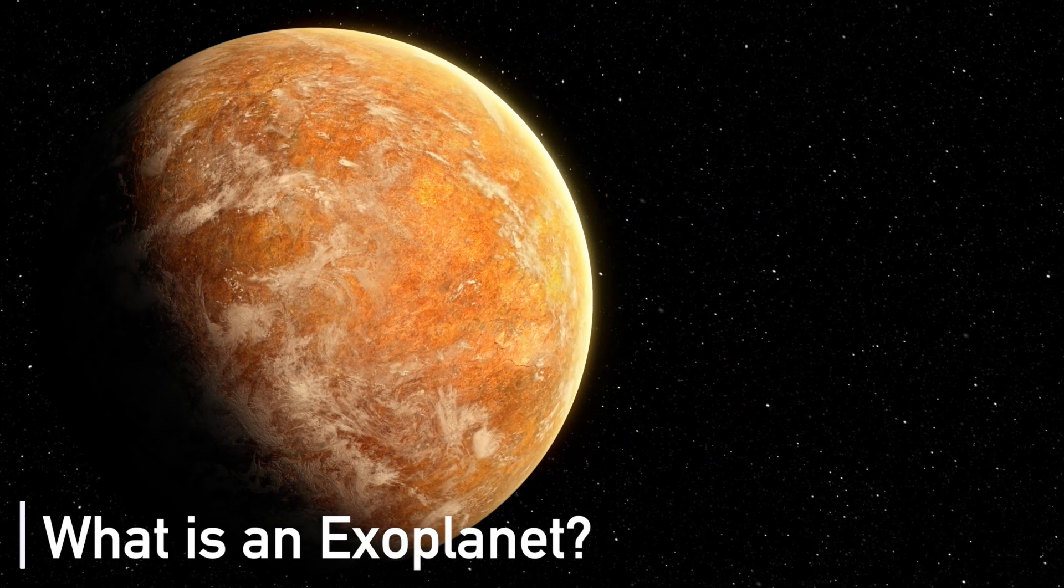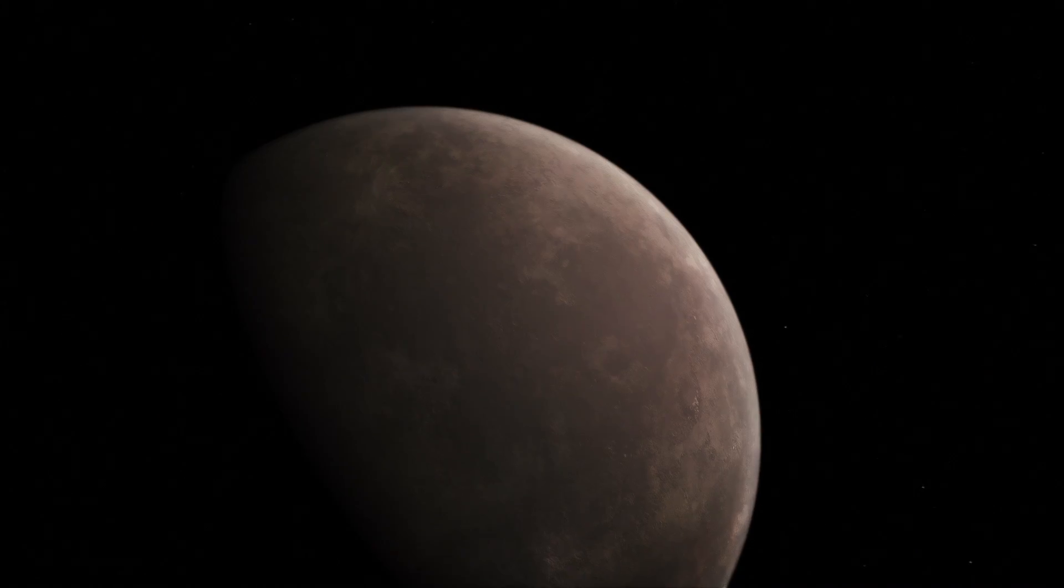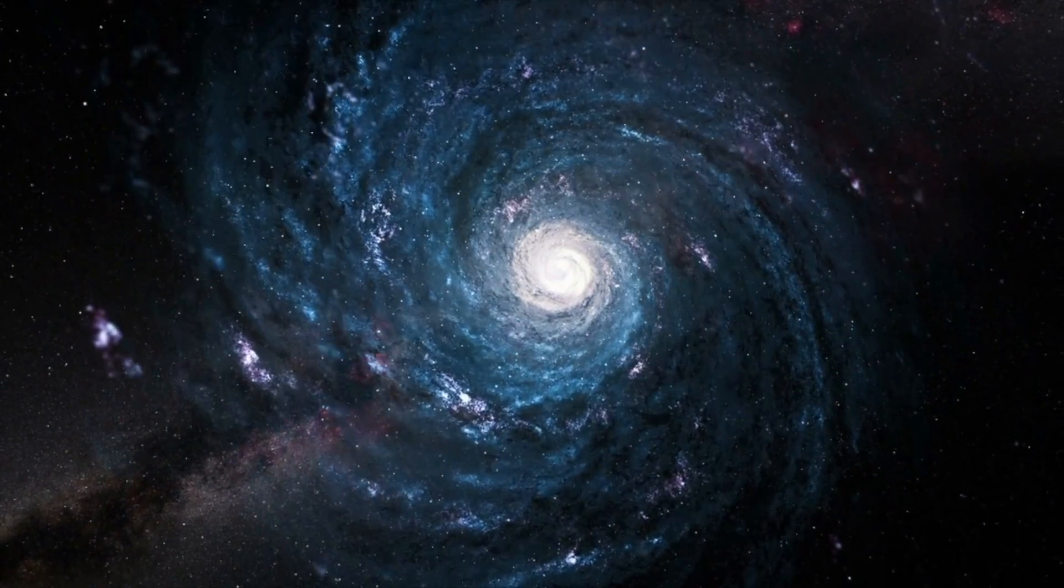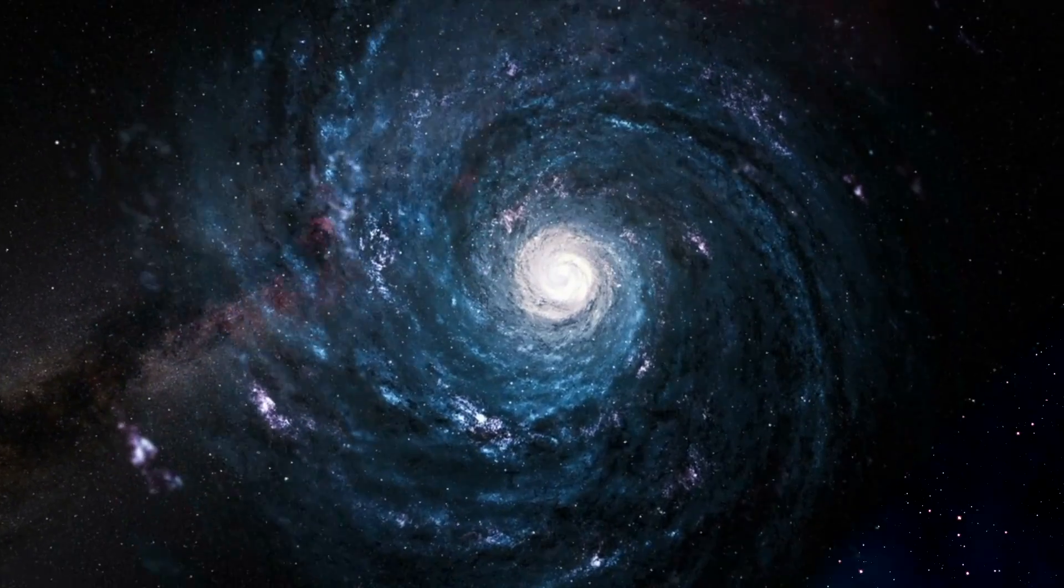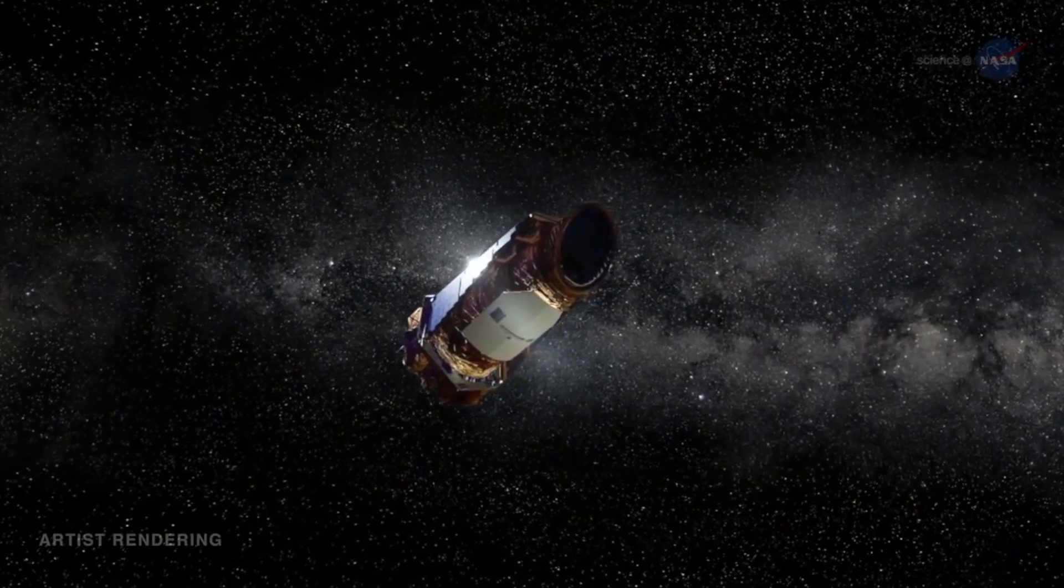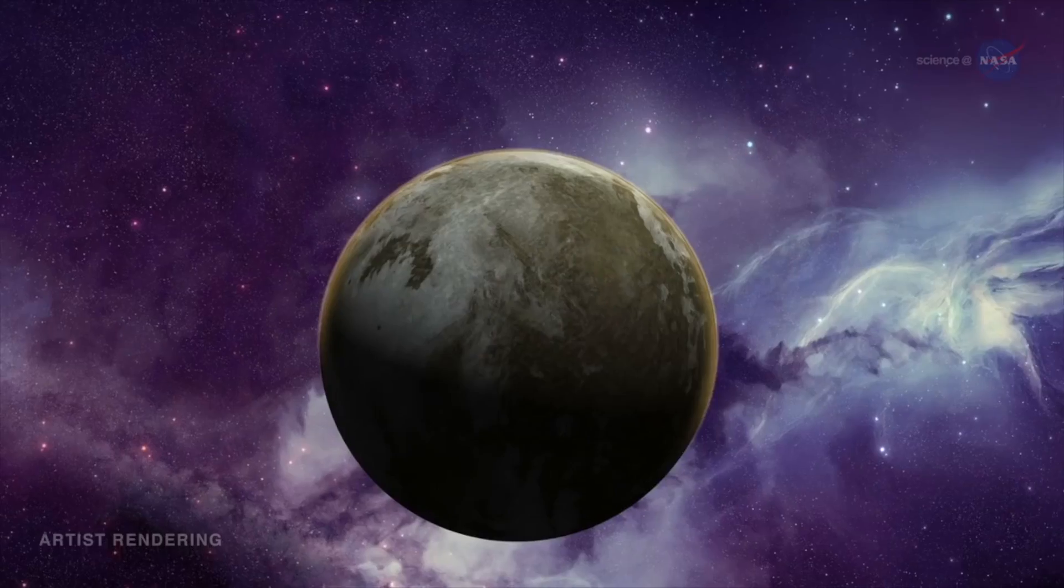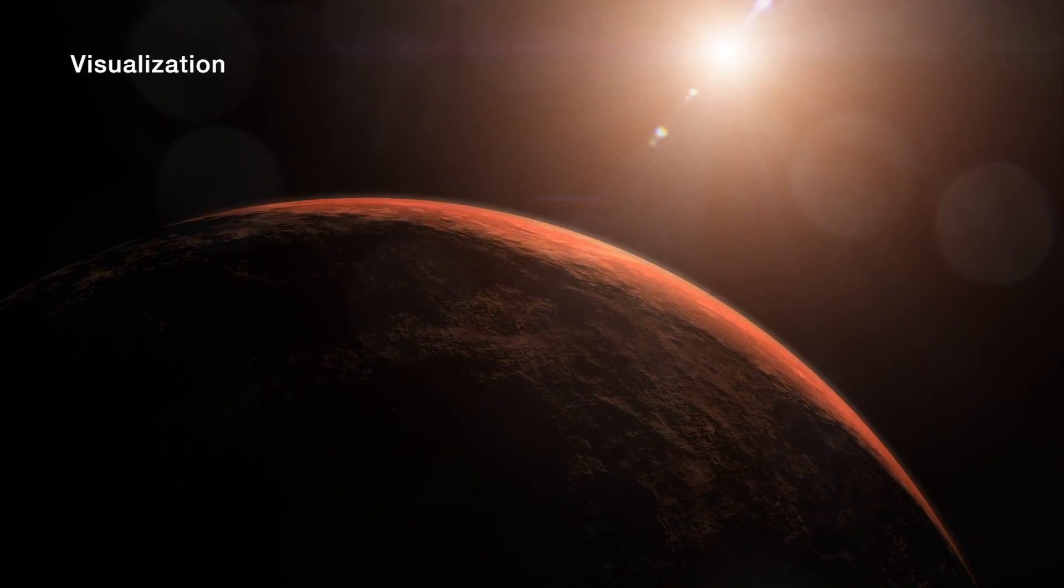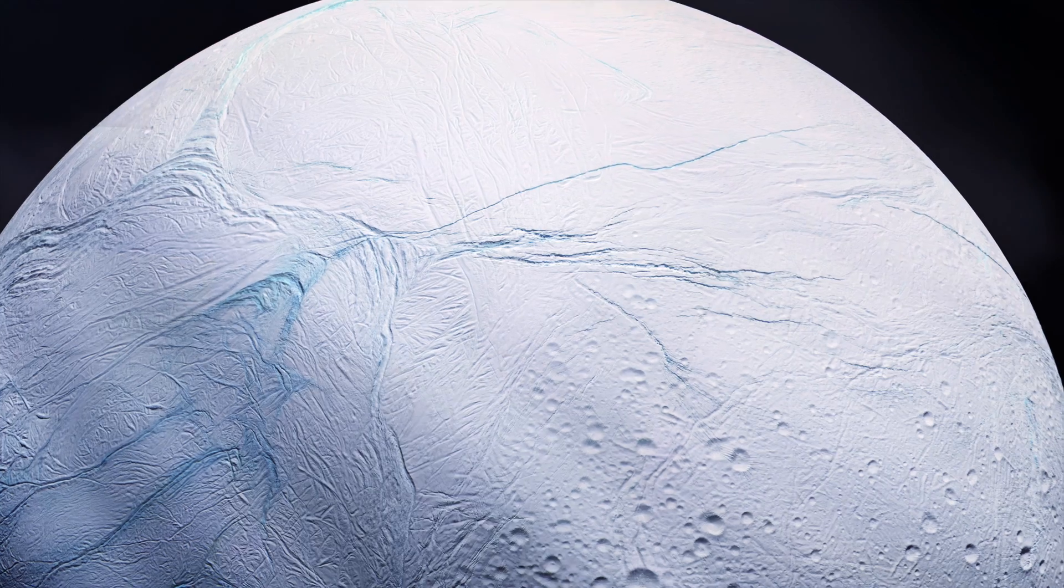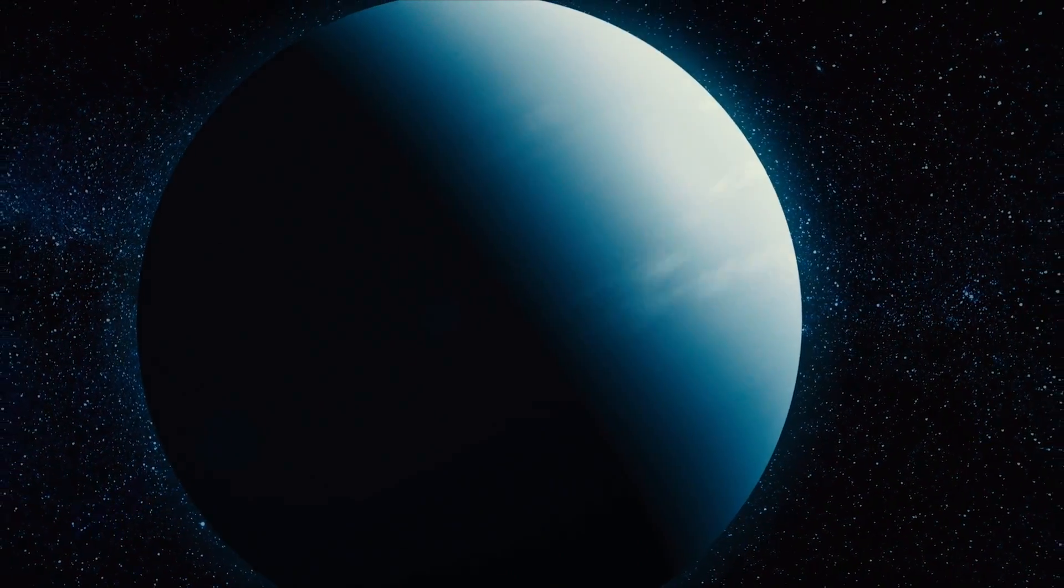An exoplanet is any planet beyond our solar system. Most orbit other stars, but free-floating exoplanets called rogue planets orbit the galactic center and aren't tethered to any star. In the last two decades, thousands of exoplanets have been found largely with NASA's Kepler Space Telescope. These planets range greatly in size and orbit. Some of them are enormous planets that are incredibly close to their parent stars. Some are icy while others are rocky.